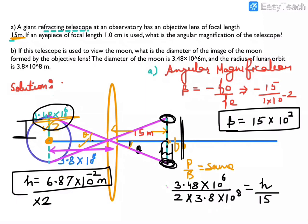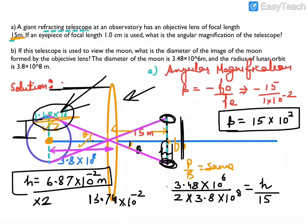h is equal to 6.87×10⁻² m. If you multiply by 2 you get the diameter: 13.74×10⁻² m — that is the answer. This is the image of the moon formed at the focal length distance. Thank you, bye bye.